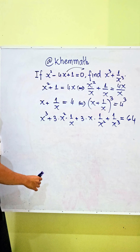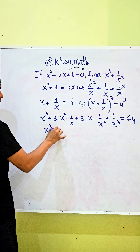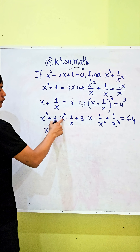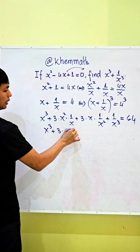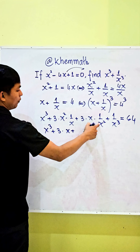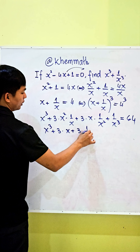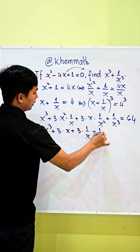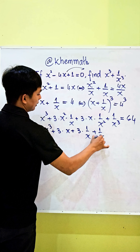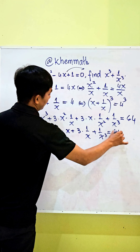Here we simplify: x cubed plus 3 times x, and plus 3 times 1 divided by x, and plus 1 divided by x cubed equals 64.